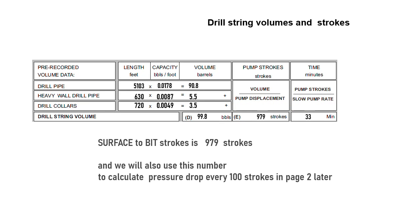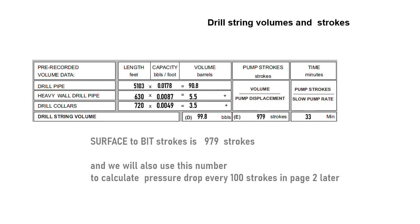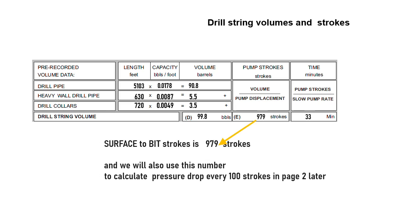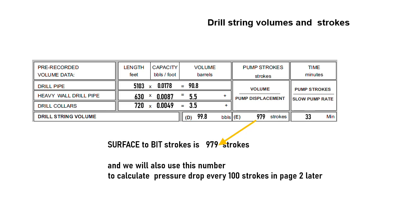This drill string total stroke — often known as surface-to-bit stroke — is 979 strokes. This value will be used later on page 2 to calculate pressure drop every 100 strokes.